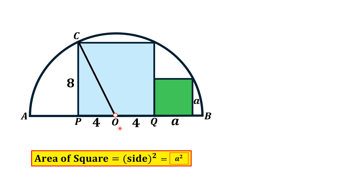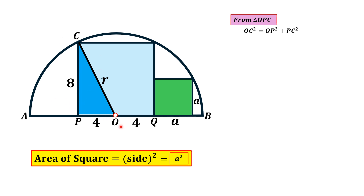Let's draw a line segment from point O to point C, a corner of the larger square. OC is the radius of the semicircle, which we call r. The shape OPC is a right triangle. Applying the Pythagorean theorem: OC² = OP² + PC², where OC is r, OP is 4, and PC is 8. So R² = 16 + 64, thus R² = 80.